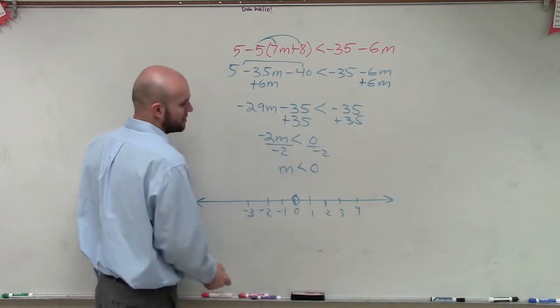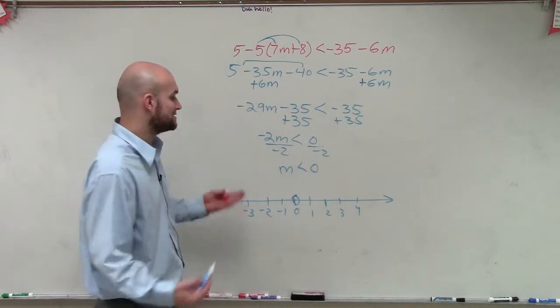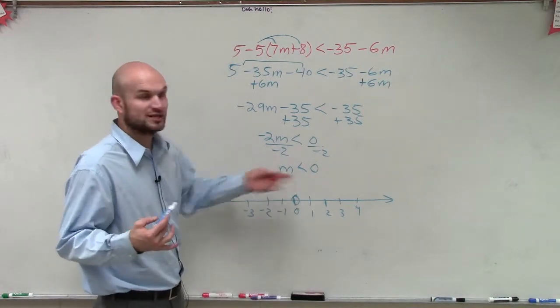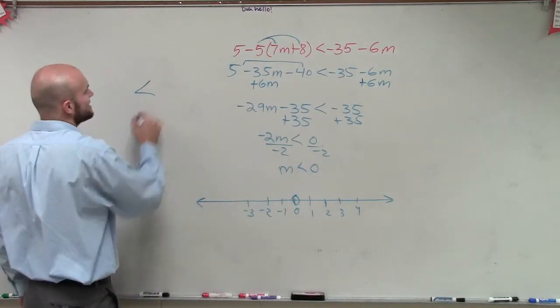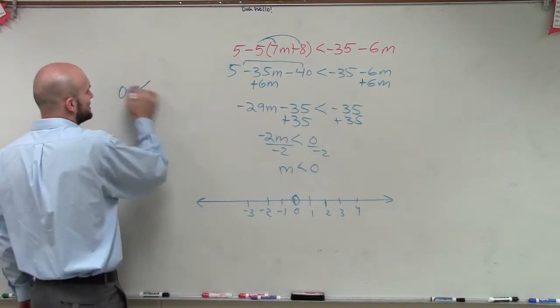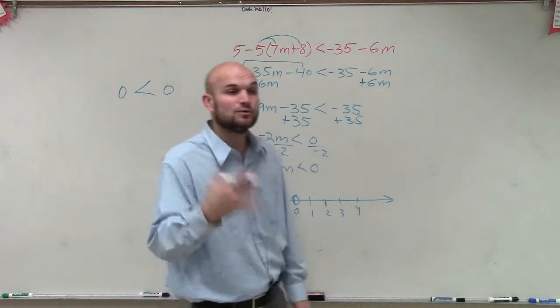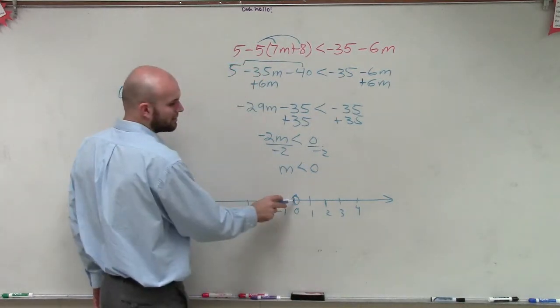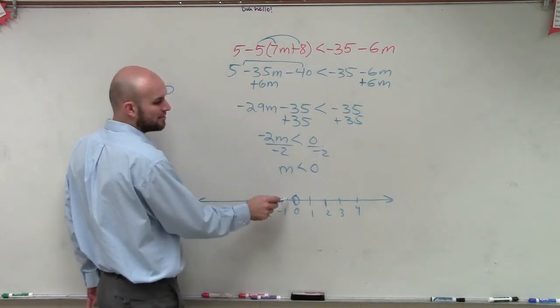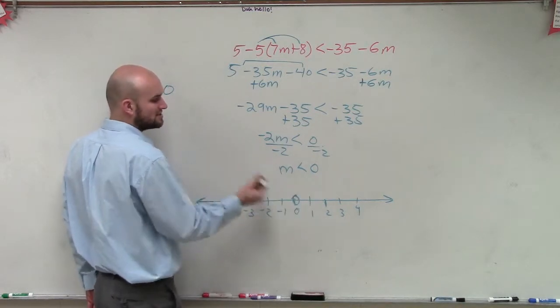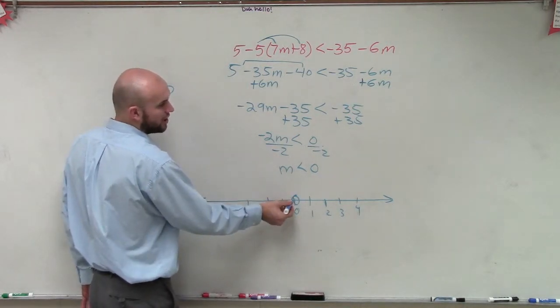So I start at 0, and I make a big open circle. And now I need to determine, is this going to be filled in or not? Because remember, this just says less than. So is 0 less than 0? No, 0 is equal to 0, right? So therefore, we're going to leave it open, because 0 is not a part of my solution. However, all the points to the left are going to be.